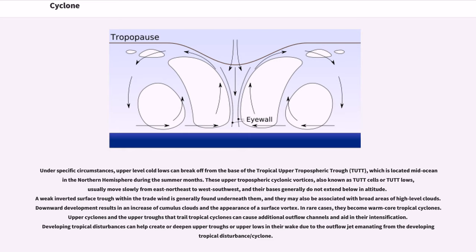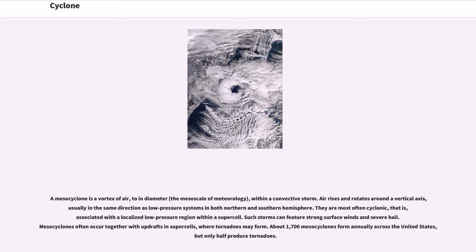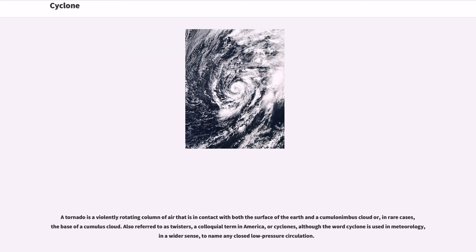The following types of cyclones are not identifiable in synoptic charts. A mesocyclone is a vortex of air, 2 to 10 km in diameter at the mesoscale of meteorology, within a convective storm. Air rises and rotates around a vertical axis, usually in the same direction as low-pressure systems in both hemispheres. They are most often cyclonic, associated with a localized low-pressure region within a supercell. Such storms can feature strong surface winds and severe hail. Mesocyclones often occur together with updrafts in supercells, where tornadoes may form. About 1,700 mesocyclones form annually across the United States, but only half produce tornadoes. A tornado is a violently rotating column of air in contact with both the surface of the earth and a cumulonimbus cloud, or in rare cases the base of a cumulus cloud. Also referred to as twisters, or cyclones, although the word cyclone is used in meteorology in a wider sense to name any closed low-pressure circulation.